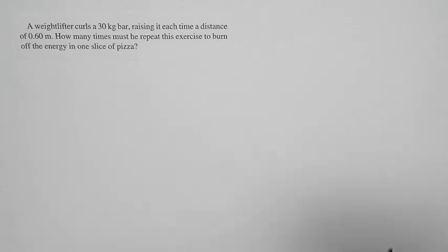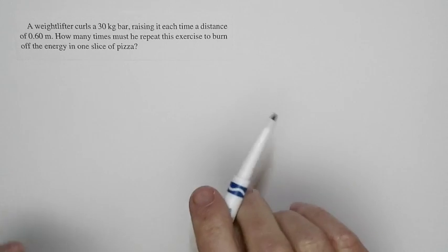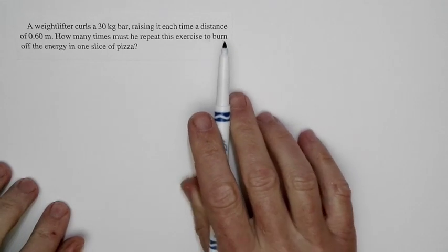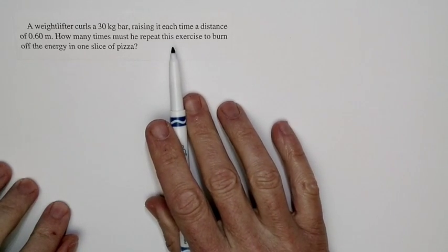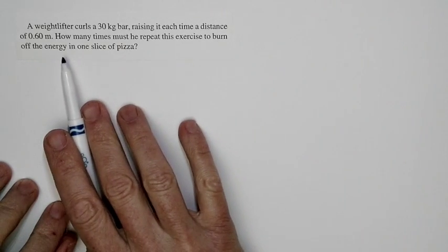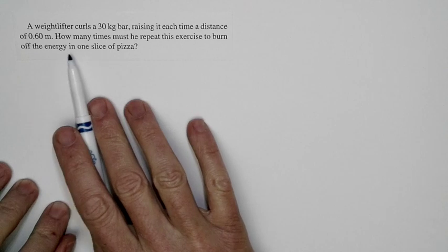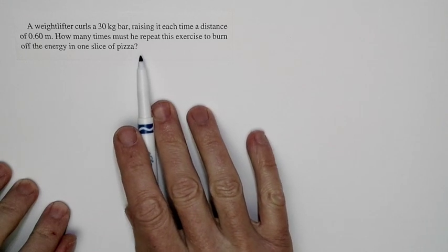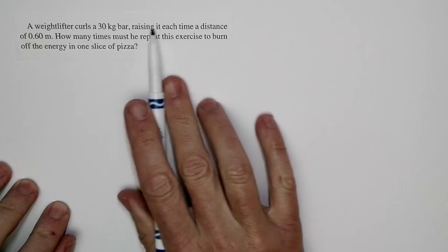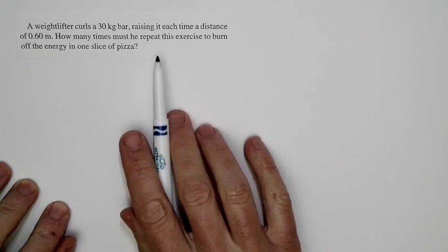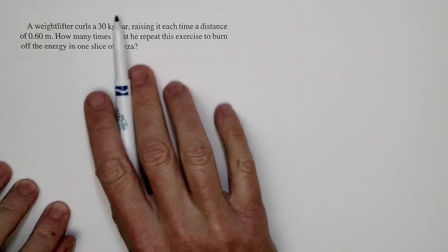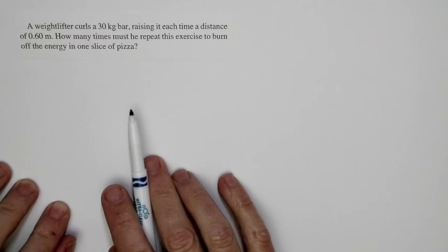Chapter 10 is about energy and Chapter 11 is about using energy. We're concerned with real-world applications of energy concepts. For instance, if you eat a slice of pizza, how much energy expenditure can you have? How many times can you raise a 30 kilogram bar?